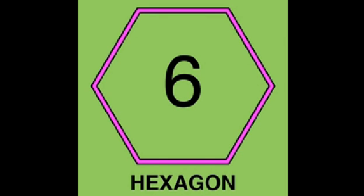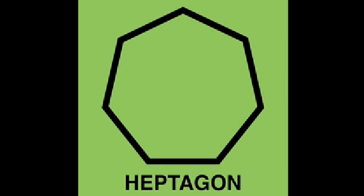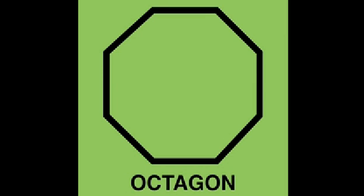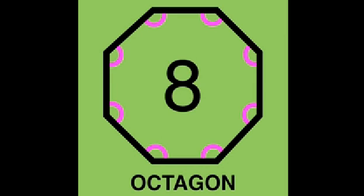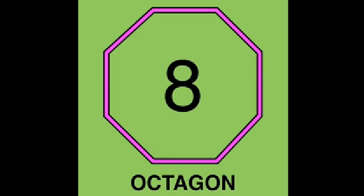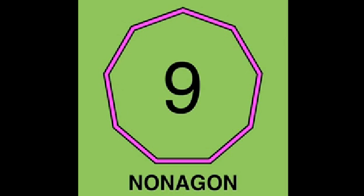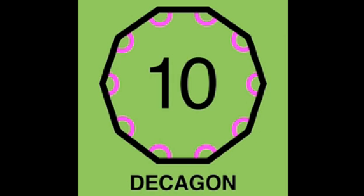A hexagon is a polygon with six angles and six sides. A heptagon is a polygon with seven angles and seven sides. An octagon is a polygon with eight angles and eight sides. A nonagon is a polygon with nine angles and nine sides.